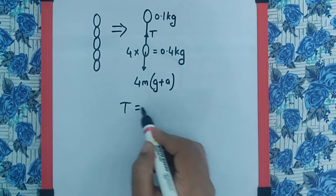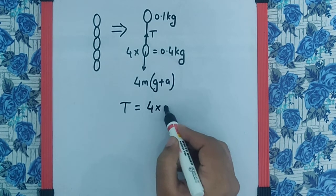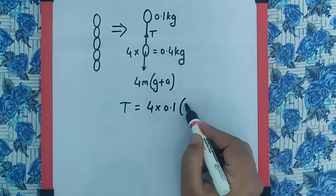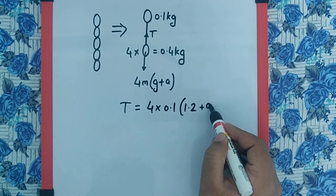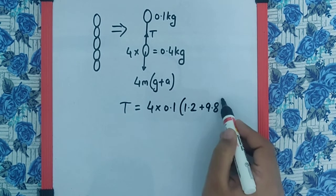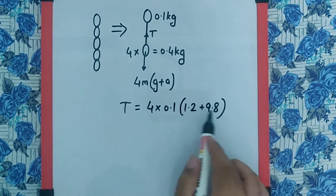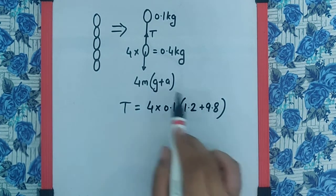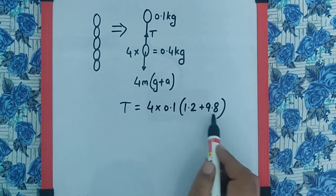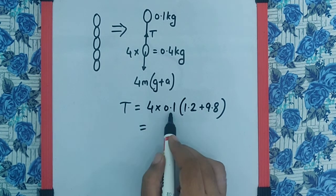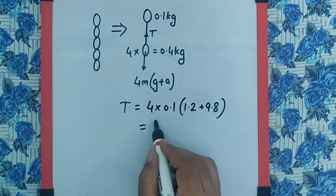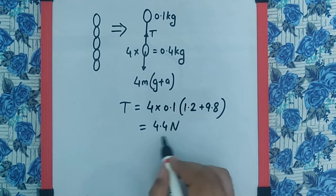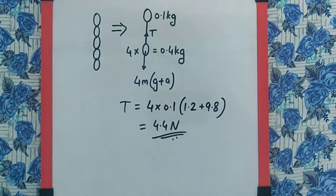So the tension equals 4 times m, which is 0.1, times (g plus a). G is 9.8 and a is 1.2, which together makes 11. So 4 times 0.1 is 0.4, times 11 will give me 4.4 newtons, and that is the final answer.